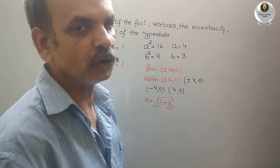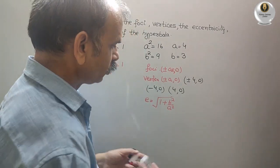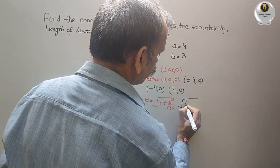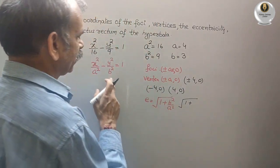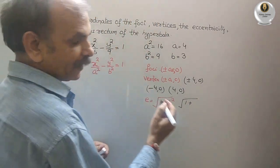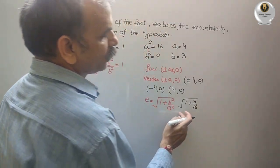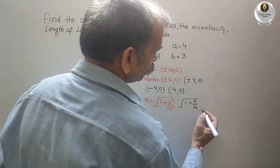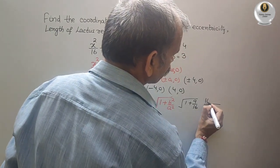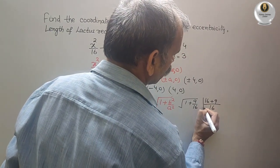Just substitute the value. So here we will get root under 1 plus B square. B square is 9. 9 by 16. Take the LCM. So LCM is 16. You will get 16 plus 9. That too under root.